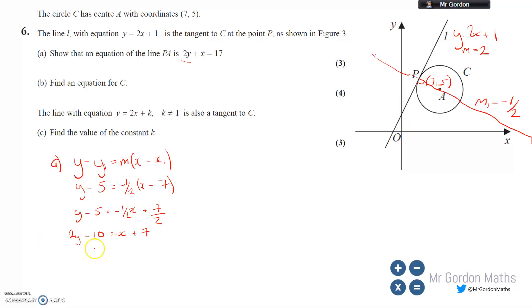2y-10 equals -x+7. Now rearrange: I'm going to move the minus 10 over, combine it with plus 7, and move the minus x across to get 2y+x=17. That's part A.